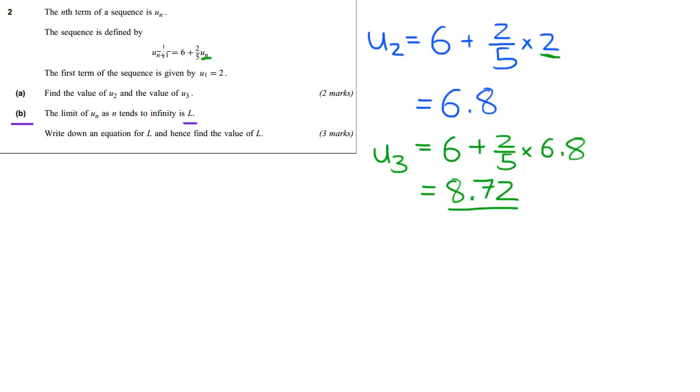So what it's trying to tell you is take this as large as you can go and take this as large as you can go and put them in an equation together and call that large number L. So you could call it infinity but we'll call it L. So L is going to be equal to 6 plus 2 over 5 times by L. And then just find out what L is.